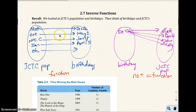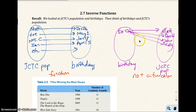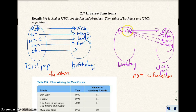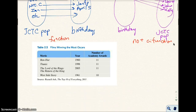We looked at the original problem here — we had the population being the input and the birthday being the output. That was a function; each input only yielded one output. But when we inverse it — inverse means to reverse it — and we made the birthday the input, then no longer do we have a function, because each birthday probably yielded more than one output for persons.